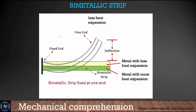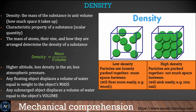Next is the bi-metallic strip — a question that sometimes appears on the test. Two different types of metals are sandwiched together. The metal with less heat expansion is on top; the metal with more heat expansion is on the bottom. When cooled, one part bends in a specific direction. Next, density equals mass over volume. Key takeaway: higher altitude means less air density and less atmospheric pressure.